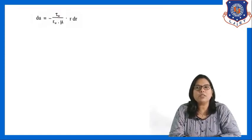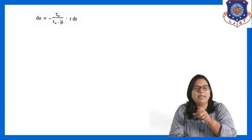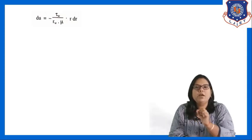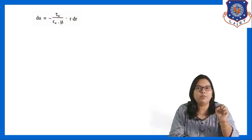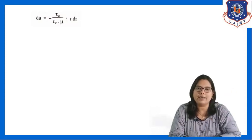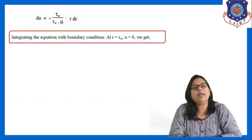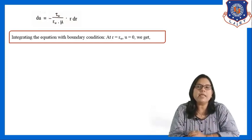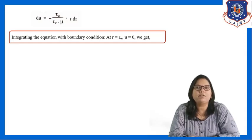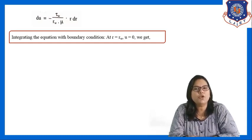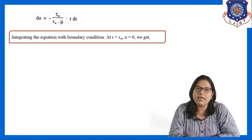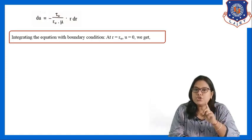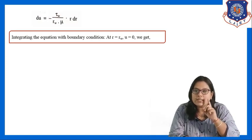Writing the equation for du — that is change in velocity — we get du equals minus tau_w upon r_w·mu into r dr. Now we integrate this equation with the boundary condition: at r = r_w, u = 0. This follows the same circular pipe situation used in the first derivation for shear stress distribution.